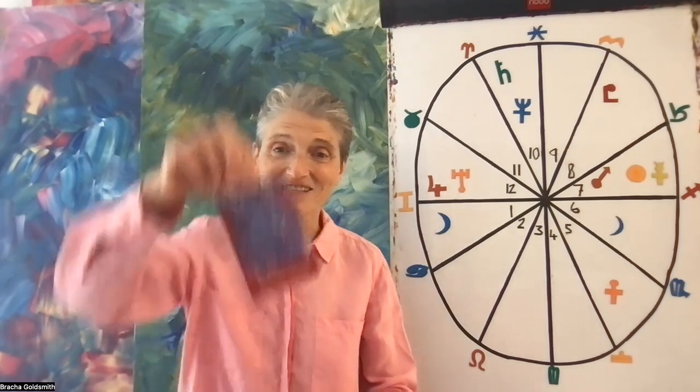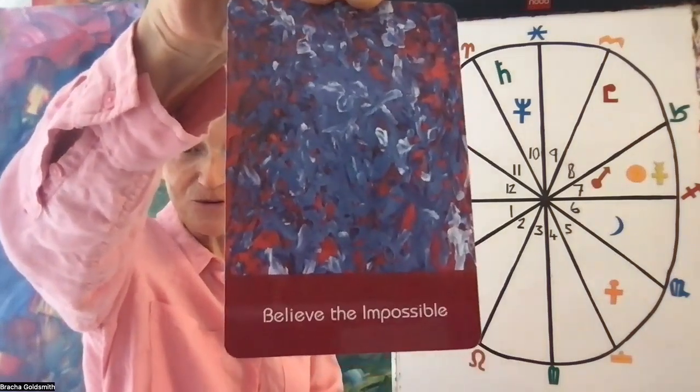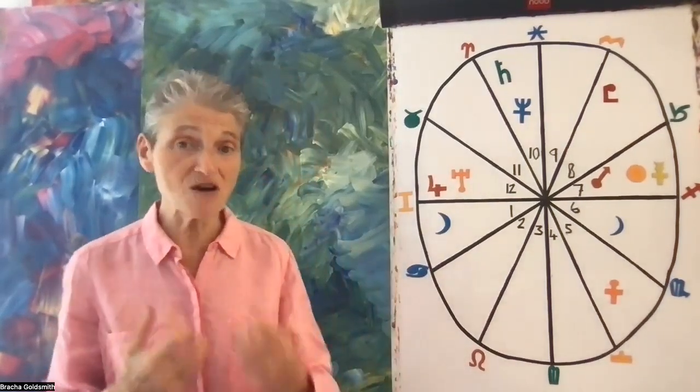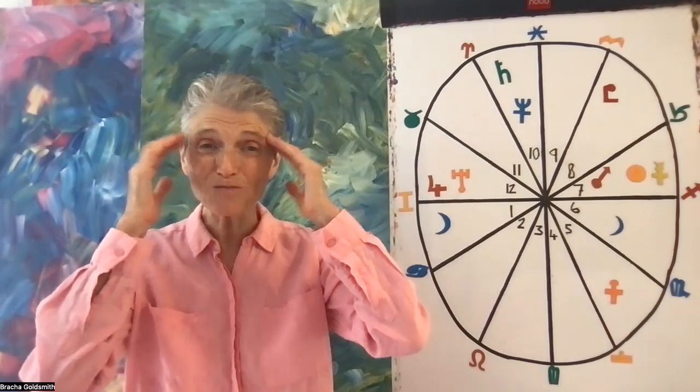Here we go. So your card is believe the impossible. Interesting that we've got that card for you because your ruler is Mercury, all to do with the mind and what you believe.